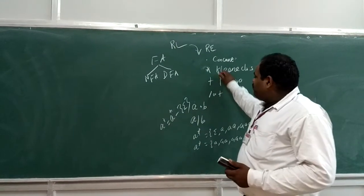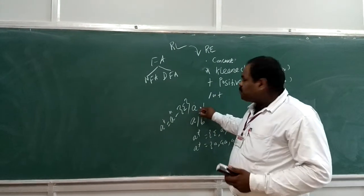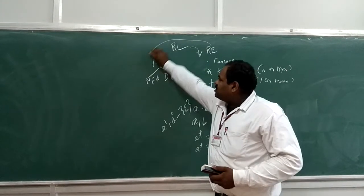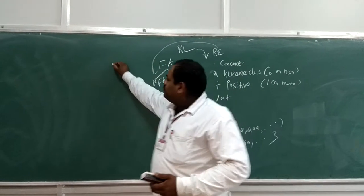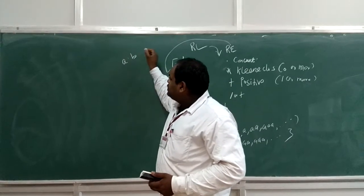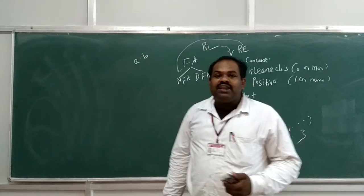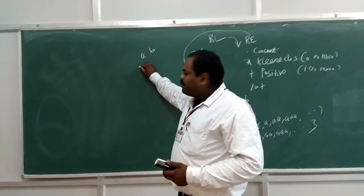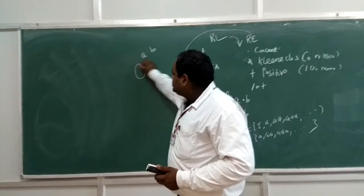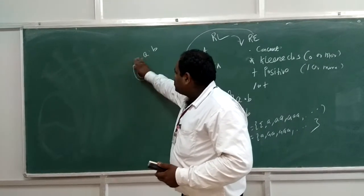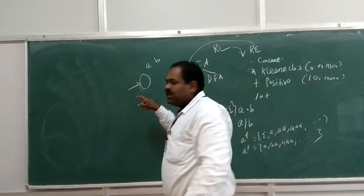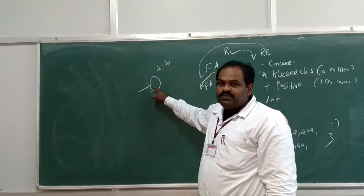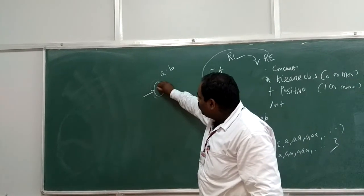We can see now for example, we can see the corresponding regular expression into the corresponding NFA. For example, A dot B is the regular expression. Now we can construct the NFA. NFA, we have a start state. Start state. That is, it is denoted by the arrow. If the arrow is missing, then it is a start state Q0.